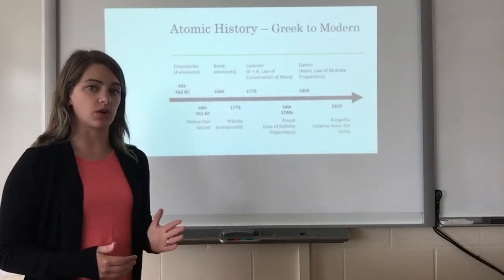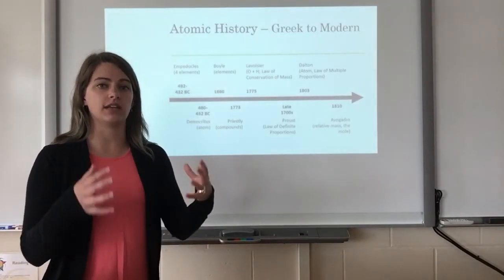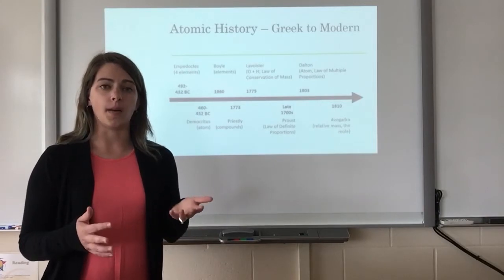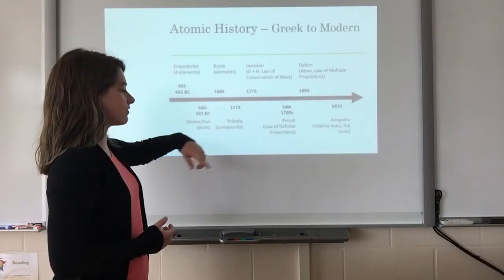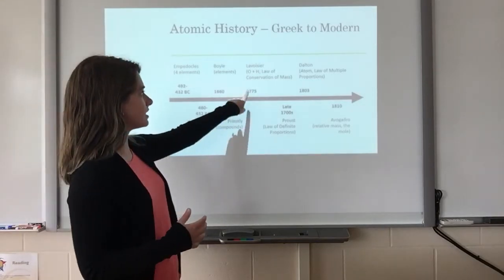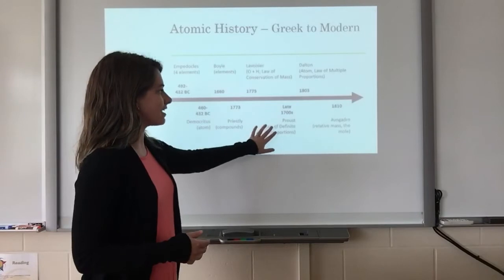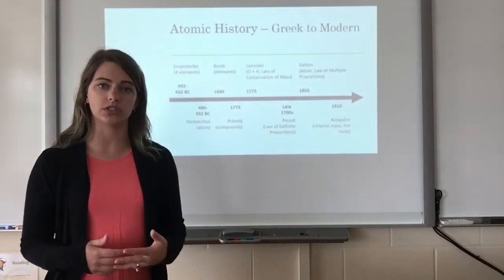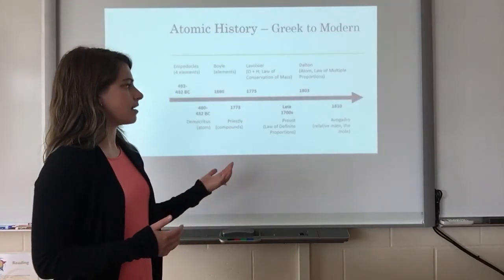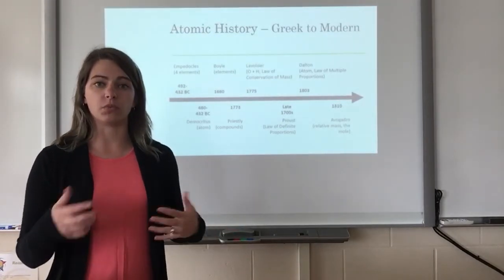There's a huge gap of time, and the next significant development comes around 1660 with Boyle, one of the first scientists to identify some of our current elements. We have Priestley in 1773 who said that compounds were made up of elements. In 1775, Lavoisier gave us the law of conservation of mass and identified hydrogen and oxygen. In the late 1700s, Proust is credited with the law of definite proportions. Then Dalton in 1803 defined our first modern atomic model and came up with the law of multiple proportions. In 1810, Avogadro came up with relative mass and the idea of the mole, which we use to count atoms.